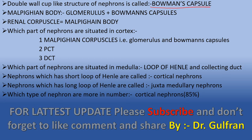The double wall cup-like structure of the nephron is called Bowman's capsule. The Malpighian body is Bowman's capsule plus the glomerulus. The glomerulus is the tuft of capillaries present in Bowman's capsule. The renal corpuscle is also called the Malpighian body. The part of the nephron situated in the cortex is the Malpighian corpuscle — that is the glomerulus, Bowman's capsule, PCT, and DCT.